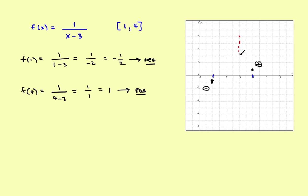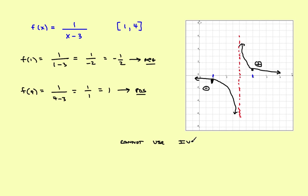The problem is the original function is not continuous in that interval. If x equals 3, you'd have 3 minus 3 in the denominator — there's a vertical asymptote right there. The graph has a vertical asymptote at x equals 3: on one side the function comes in and goes down, and on the other side it comes up. The graph never has a zero in this interval. You cannot use the intermediate value theorem here because the original function is not continuous. Be careful — if the function is not continuous in the interval, you cannot apply the theorem.